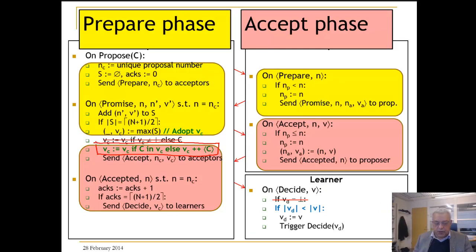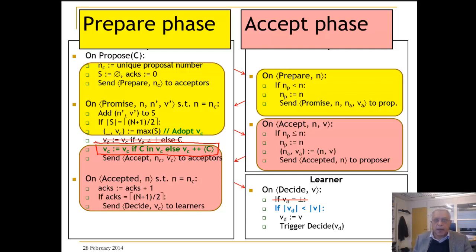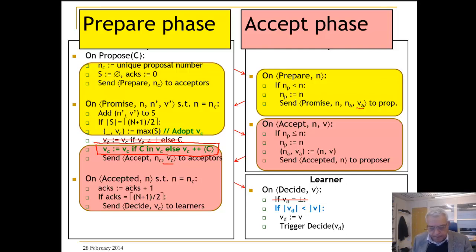This finishes the proof of multi-Paxos or sequence Paxos. From now on, we are going to look at opportunities for optimization of these algorithms. First, we can do prepare only once in the beginning and pipeline accepts. We will also be able to trim all the sequences that are sent back and forth between the proposer, acceptors, and learners.